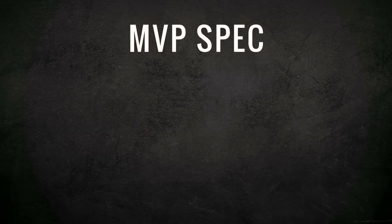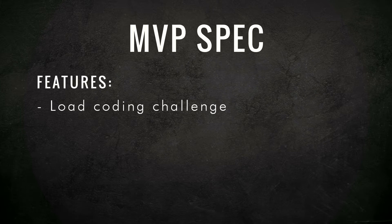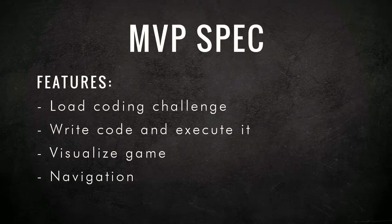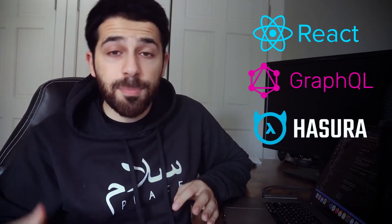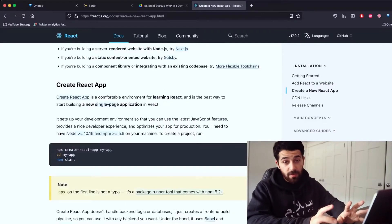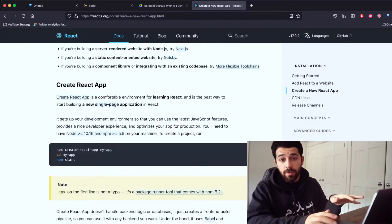Now that we're clear on that, let's start speccing our app. I'll just mention the major functionalities. We need to be able to load a coding challenge, write code, and execute it — so we need a code editor. We need to visualize the game, and we need some navigation to progress step by step. The tech stack: React for the frontend, GraphQL for the API, Hasura for the backend, and PostgreSQL for the database. I want to go fast and build our web app in less than 24 hours, so we'll use the Create React App starter project — it lets us set up our environment with only one command.